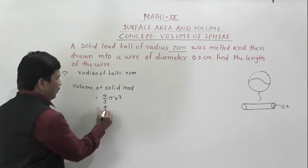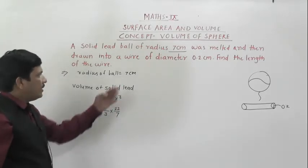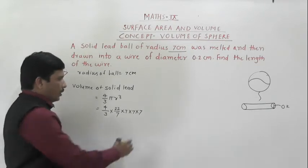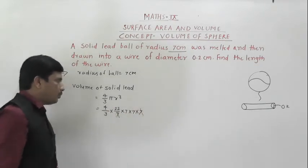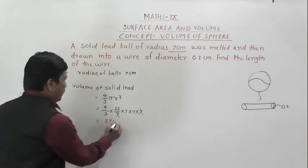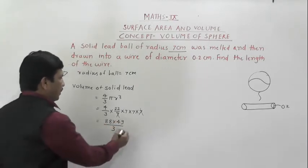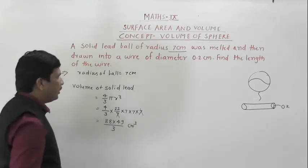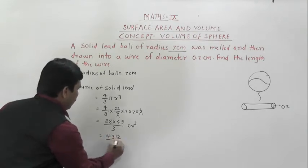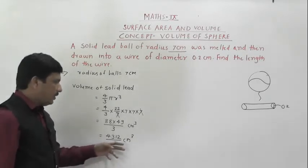So here: 4/3 multiplied by π = 22/7, and radius is 7 centimeters, so we multiply 7 × 7 × 7. This 7 in the numerator and the 7 in the denominator cancel. What remains is 22 × 4 = 88, then 88 × 49 divided by 3 centimeter cube. This product equals 4312 divided by 3 centimeter cube.